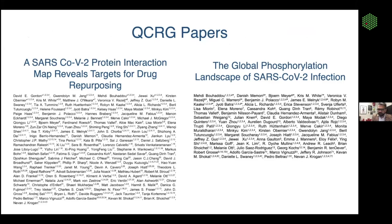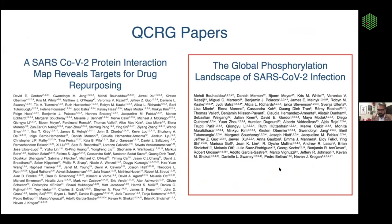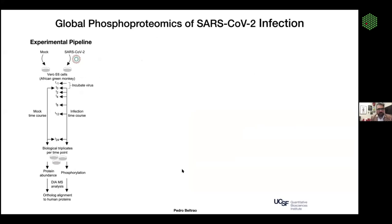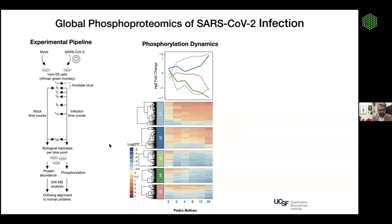For the last few minutes I'll talk about the second paper — another great collaboration, worked closely with Pedro Beltrão and scientists at EMBL-EBI. What we did here was globally look at phosphorylation changes in the context of infection to identify kinases, and ultimately identify kinase inhibitors. This was done at the Pasteur Institute, infecting Vero E6 cells with SARS-CoV-2 and globally measuring phosphorylation changes at two, four, eight, twelve, and twenty-four hours post-infection.